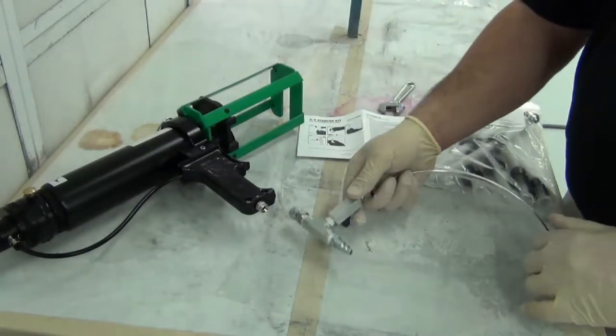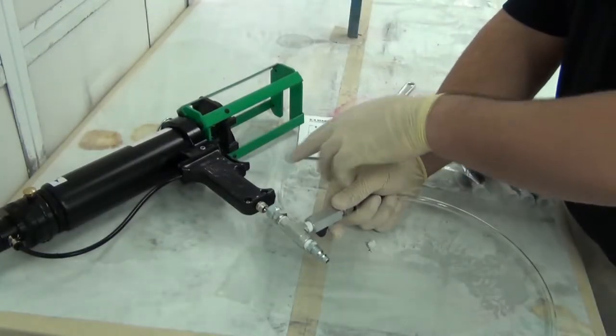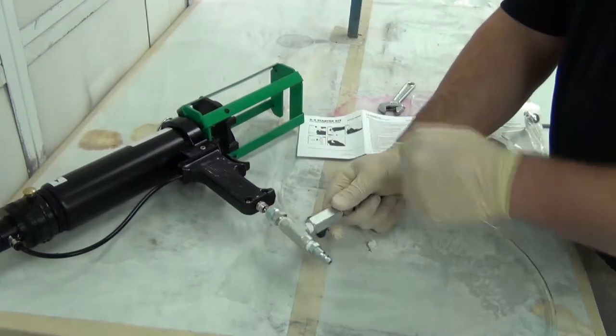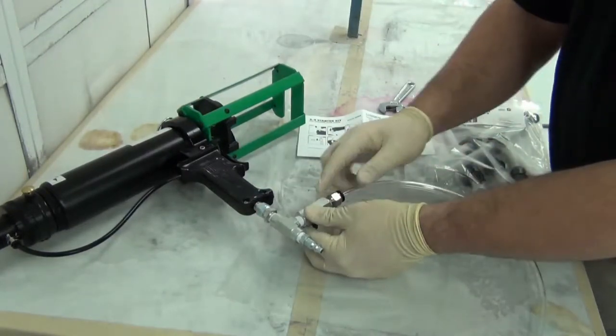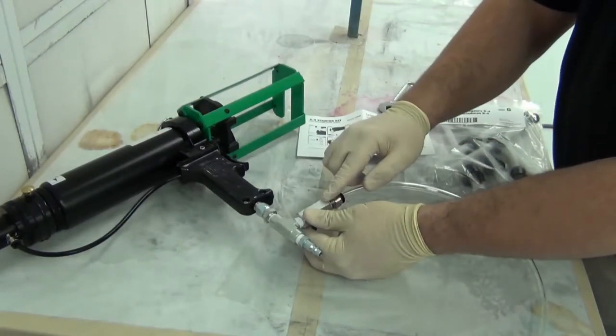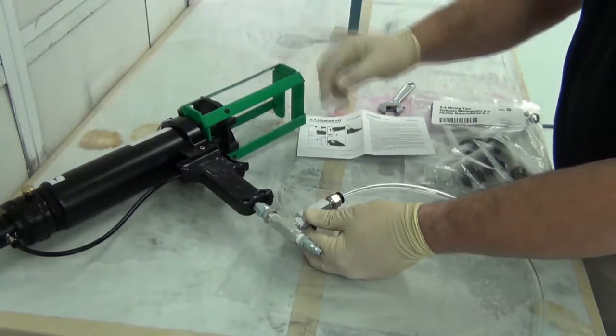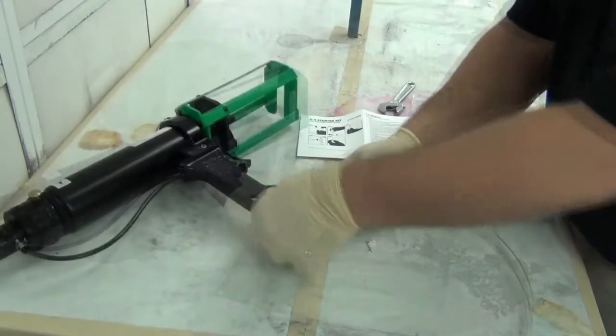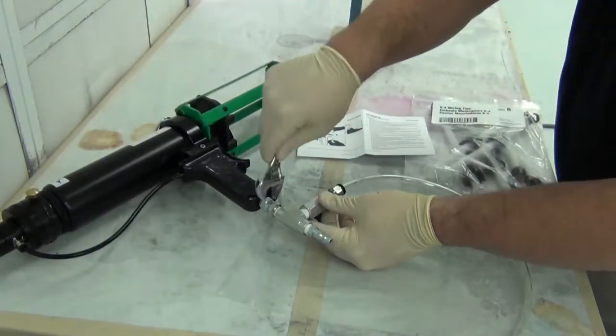First thing that we'll do is attach the atomization unit to the pneumatic gun. You want to make sure that there is no fitting on the bottom of the gun, and as you screw it on, make sure this perpendicular unit is pointing in the same direction as the barrel of the gun. Hand tighten it to start, then you just want to snug it up with a wrench.